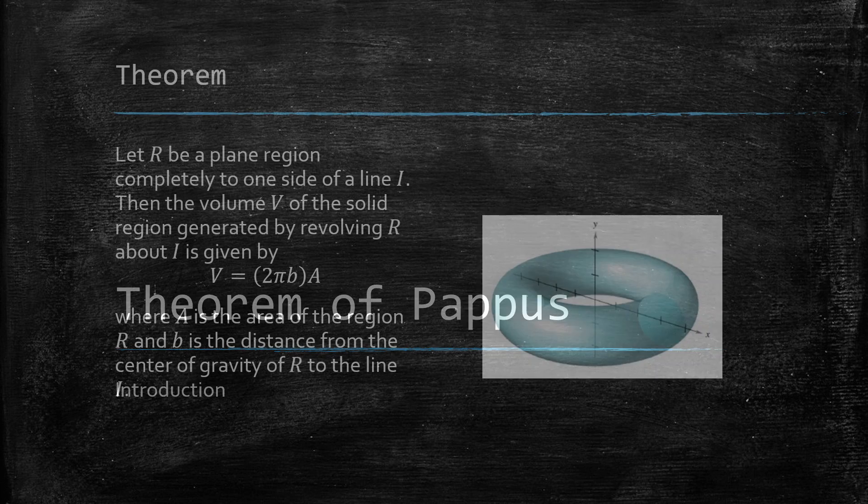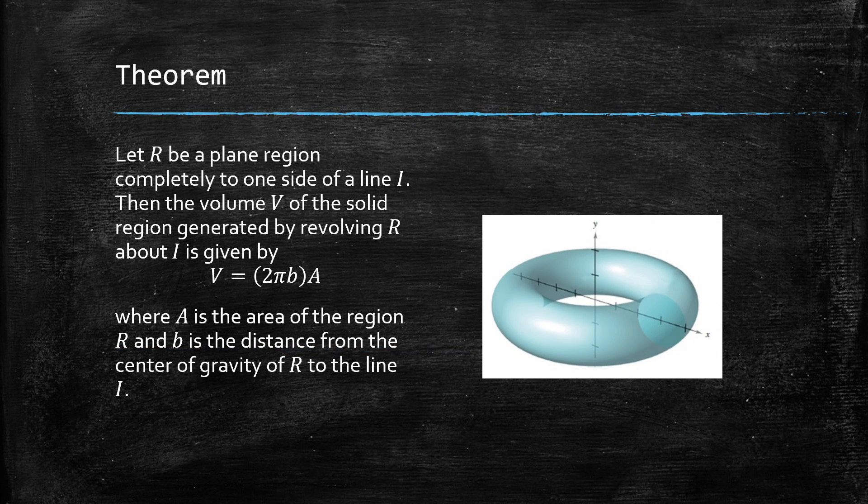But now the theorem of Pappus states that if we have a region R that's completely to one side of a line I, then the volume V of the solid generated by revolving R about I is given by the formula V equals 2 times pi times b times A, where A is the area of the region R.